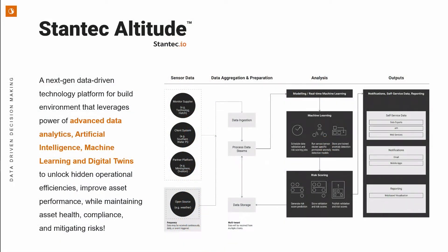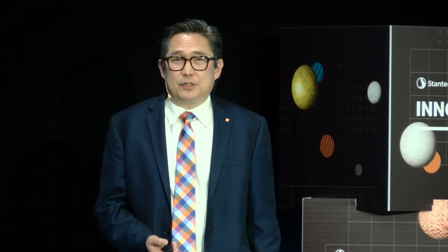So how is this accomplished? A lot of the data we're talking about is produced and captured by different sensors — many could be in your automation or SCADA system. There's other data from things like a laboratory information management system and a work order system. Stantec Altitude aggregates that data and prepares it to be analyzed using machine learning. The result of this analysis can be different types of outputs: notifications, a dashboard, or a specific API — if you just want to get results of something in particular into another system.